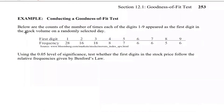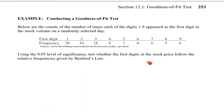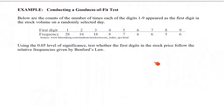Let's conduct a goodness of fit test. Here are the counts for the first digit in the stock volume of a randomly selected day — on 28 days the first digit was one, on 16 days it was two, and so on. We'll use the 0.05 level of significance to test whether the first digits of the stock volume follow the relative frequencies given by Benford's law.